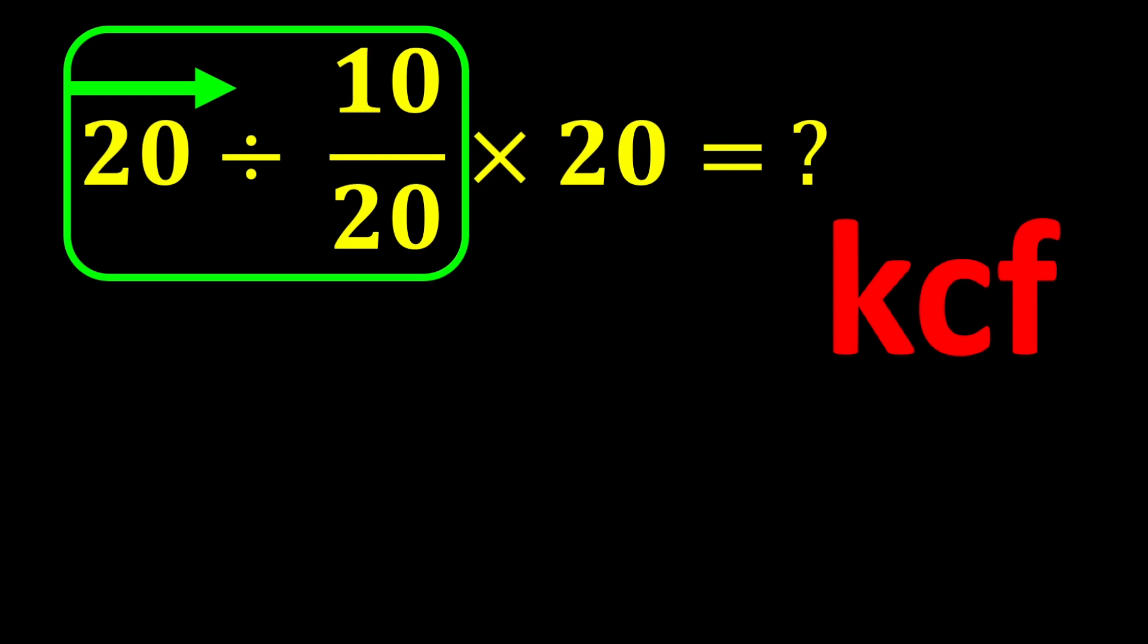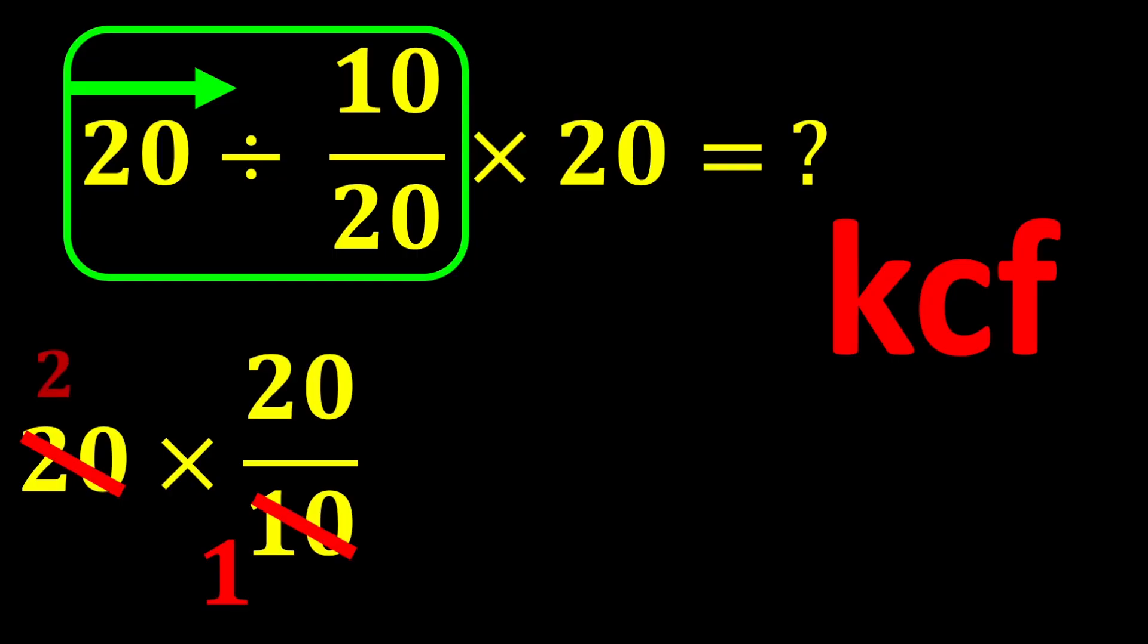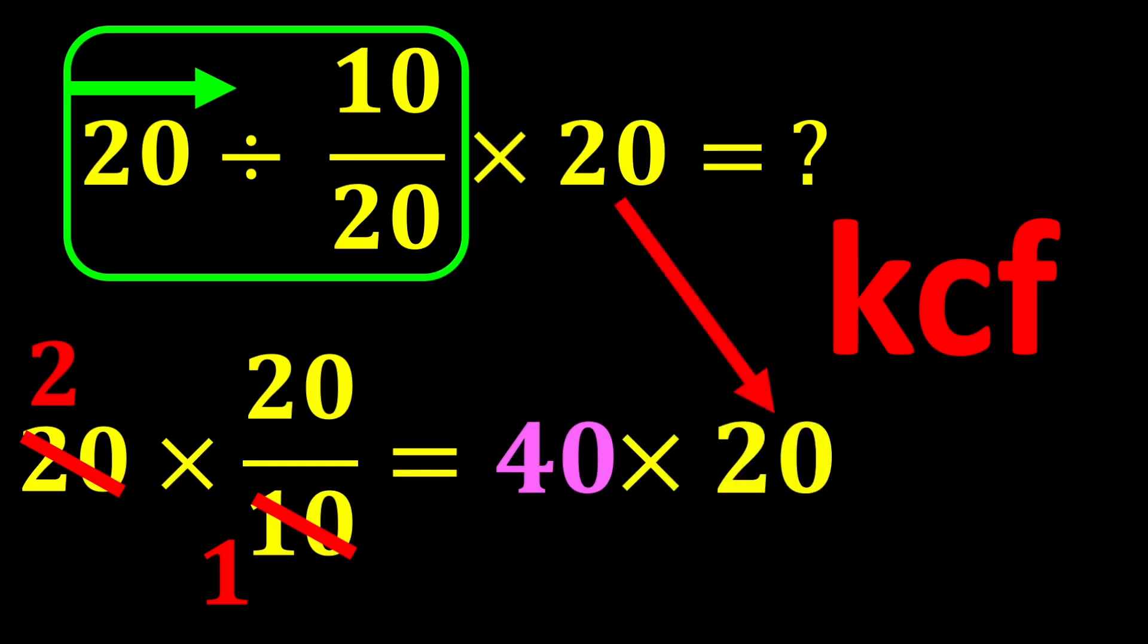According to the KCF rule, we keep 20 as it is, division changes to multiplication, and we flip 10 over 20. 10 divided by 10 gives us 1, and 20 divided by 10 gives us 2. 2 multiplied by 20 gives us 40. In the end, 40 multiplied by 20 gives us 800, which is our final answer.